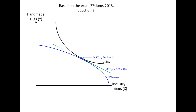That indicates that we will also have the same slope of the indifference curve, so the marginal rate of substitution between handmade rugs and industry robots will also become minus one-half. So the consumers are willing to give away one-half of a rug to be able to consume one more industry robot.